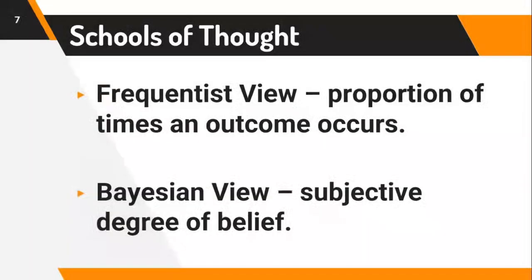There are two schools of thought when it comes to probability. We have the frequentist interpretation, which views probability in terms of the proportion of times an outcome occurs. For instance, whenever you toss a coin, there are two possible outcomes: heads and tails. If it appears as heads, the frequentist interpretation is that the particular outcome is one and the possible outcomes are two — so it is one out of two.